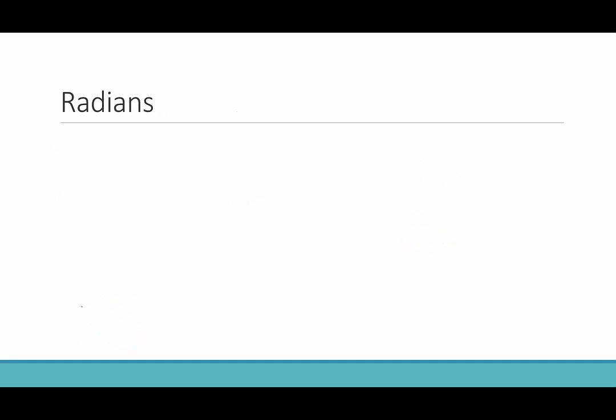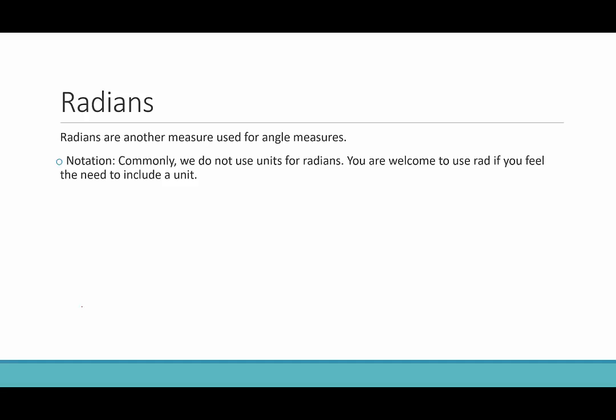There's another unit of measure that we use to measure angles, and that's called radians. So this is just another measure that we use. Generally, we do not write a unit for radians. You are welcome to write rad if you feel like you need to include a unit, but generally speaking, we would just say that the angle measure is 2π over 3 or something like that. This is a newer unit of measure. It was first used, probably, in the early 1700s, and then actually first named radians in 1873.